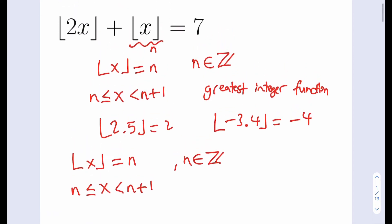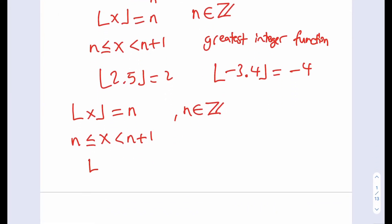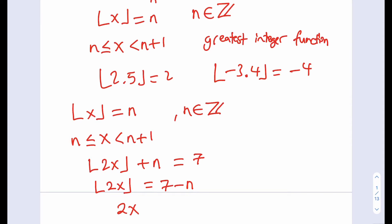The second inequality comes from the original equation. Since the floor value of x is equal to n, substituting gives us the floor value of 2x plus n is equal to 7. Isolating gives us the floor value of 2x equals 7 minus n. By the same definition, if the floor value of 2x equals 7 minus n, then 2x is between 7 minus n and 8 minus n. So we now have two inequalities.